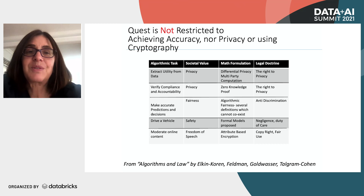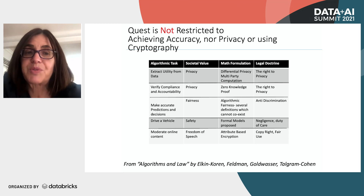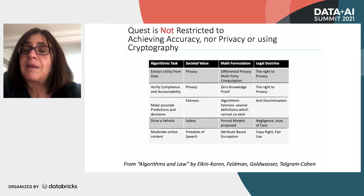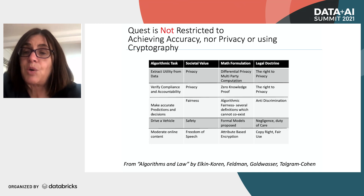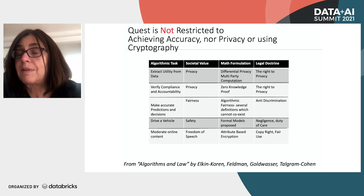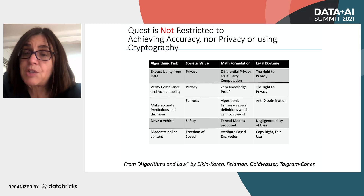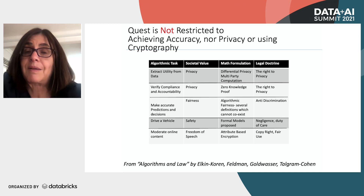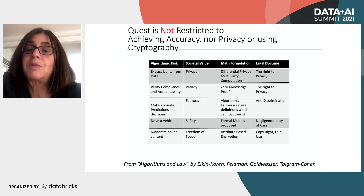Other near-term applications include proving that tax audits were selected in an unbiased manner, and that stress tests of financial institutions comply with regulation. The broader quest is not restricted to privacy or accuracy or zero knowledge proofs — there are many algorithmic tasks with societal value and legal doctrines to back them. We need to mathematically formulate the legal doctrine, show it to legal scholars, get their approval, and then achieve it algorithmically. This includes anti-discrimination doctrines, duty of care and negligence, and copyrights. Thank you very much.